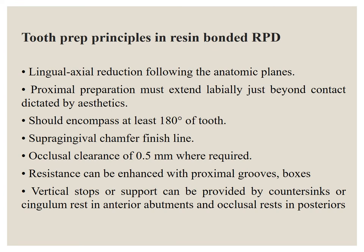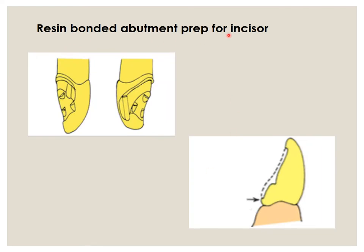Coming to tooth preparation principles in resin bonded RPDs — specifically abutment preparation for incisors. On the lingual surface, the lingual axial reduction follows the anatomical planes. The proximal preparation must extend labially just beyond contact to provide more retention. These bridges encompass only 180 degrees of the tooth, not 360 degrees, whereas conventional tooth preparation encompasses 360 degrees.